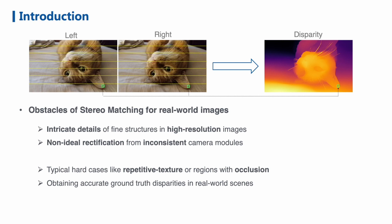Firstly, it is difficult to recover intricate details of fine structures, especially in high-resolution images. Secondly, perfect rectification is hard to obtain for real-world stereo image pairs due to inconsistent camera modules, making stereo estimation even harder. Thirdly, repetitive texture or regions with occlusion are still typical hard cases for stereo matching. Finally, it is hard to obtain accurate ground-truth disparities in real-world scenes.